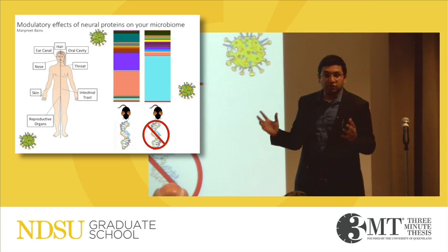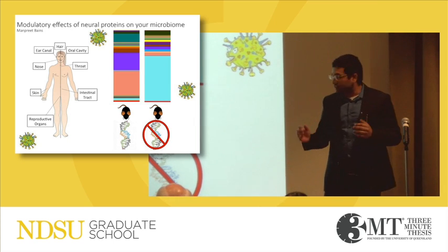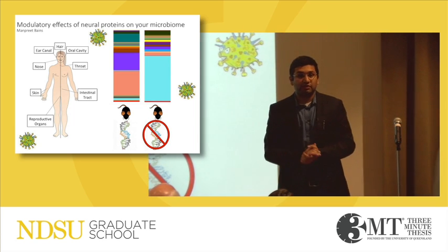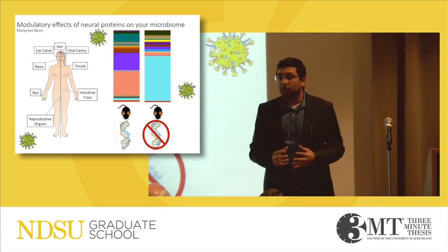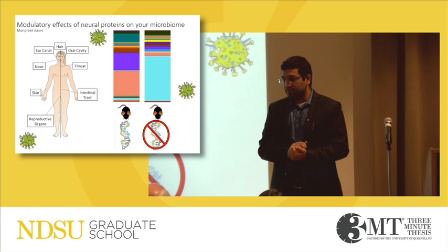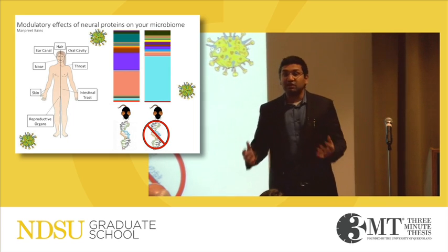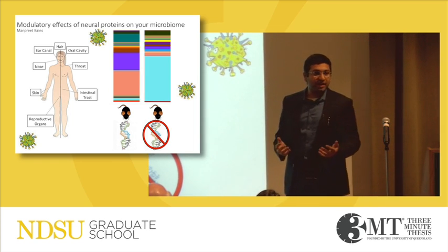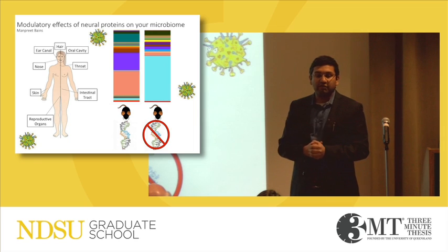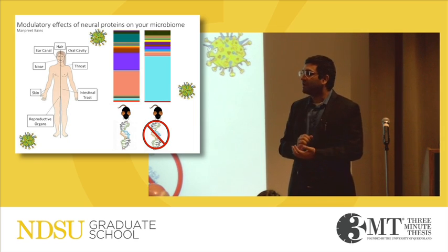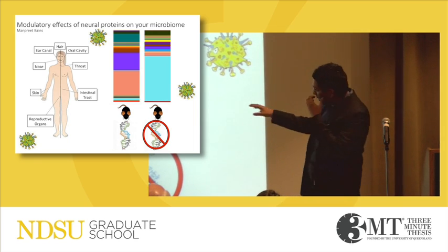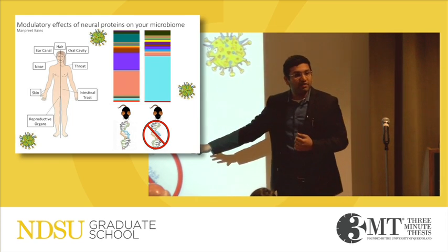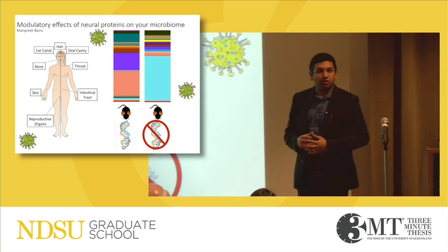So to find this out, we took two groups of mice. The first group on your left is a normal group of mice — nothing's done to them, they're absolutely normal mice. But on the right, we took a group of mice where we silenced that neural protein, so they didn't express that neural protein. We collected the microbiome, and the bar graph above these mice shows that microbiome data. Each color in that bar graph shows a different species of bacteria present in the mice. And as you can compare, you can see that there's a drastic change between the normal mice and the mice that don't have that neural protein present.